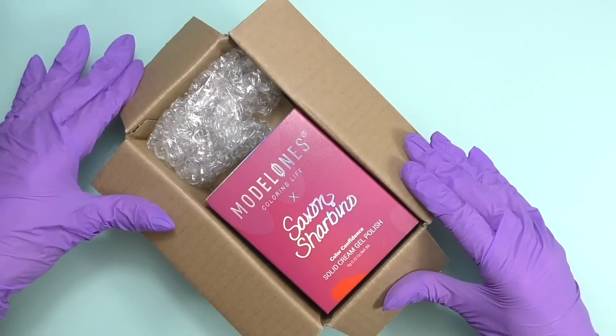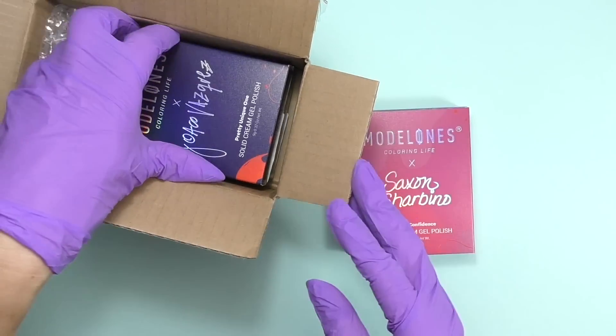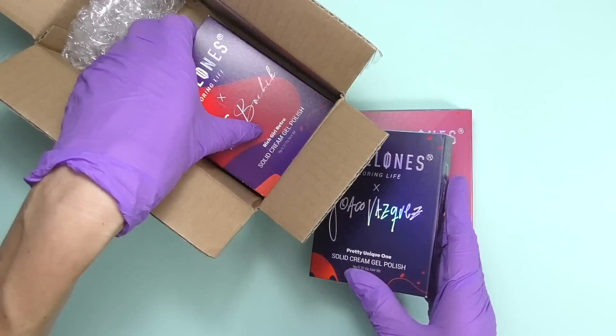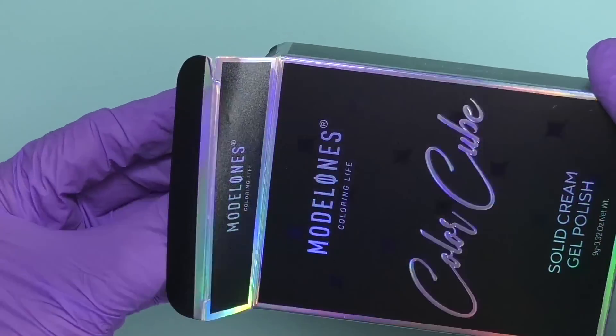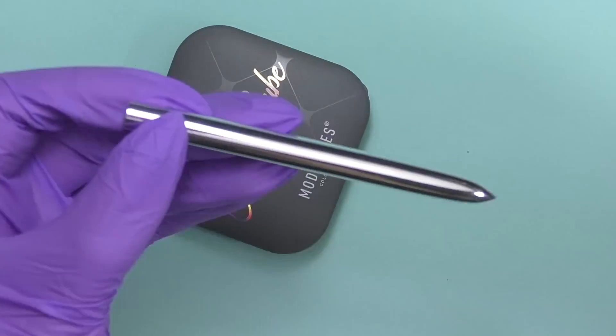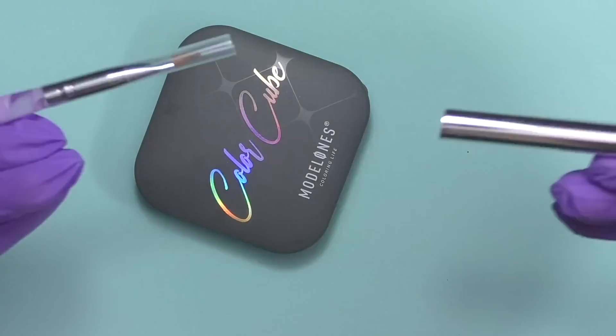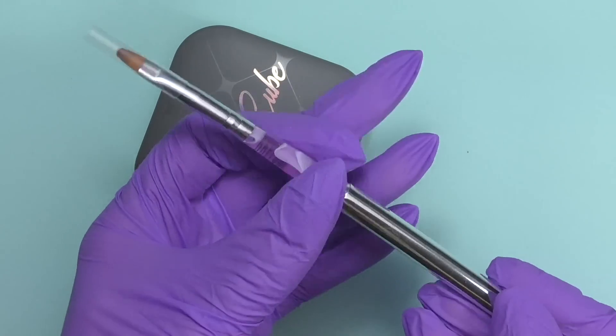Hello guys, this is Anastasia. Let's unpack this nail mail that includes three new kits by Model Ones. They collaborated with three influencers - Tom Baycheck, Jockin Vasquez, and Saxon Chabrino - and created these three collections. Each kit includes a brush that you can use for regular gel or for solid cream gel polish.